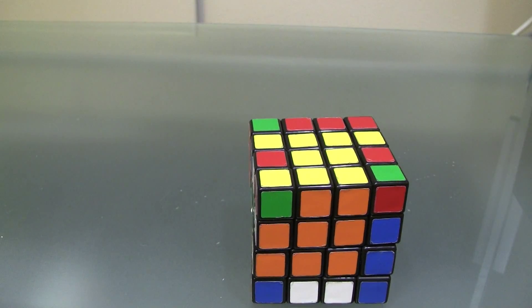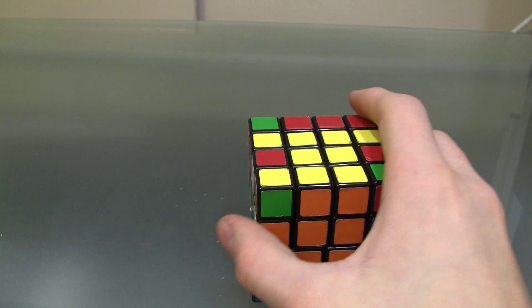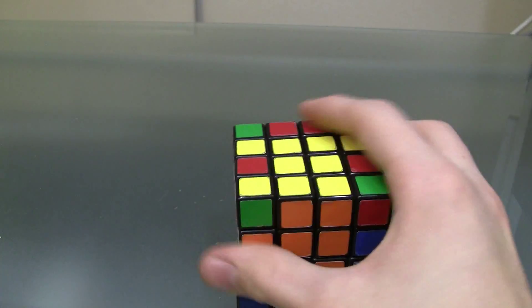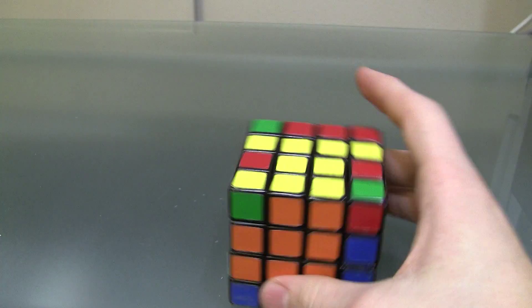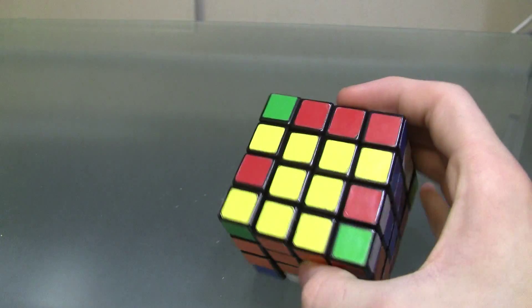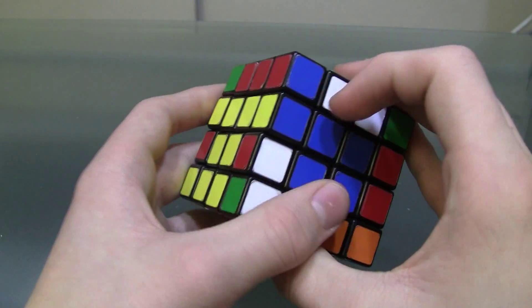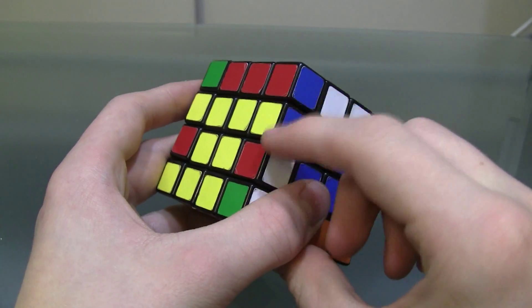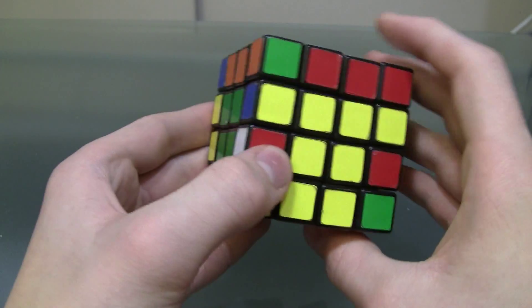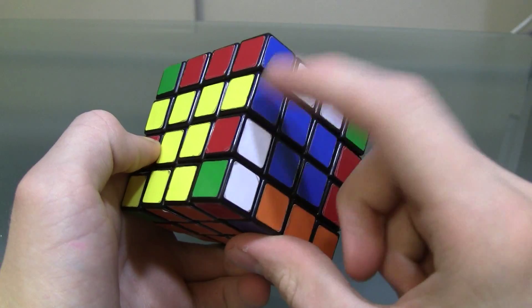Okay, so by now you should have completed all your edge pairings, or at least all the ones you can. If you're lucky, you can pair up all 12 edges without any trouble, but chances are you have an edge parity case like this, which is where they don't automatically match up.